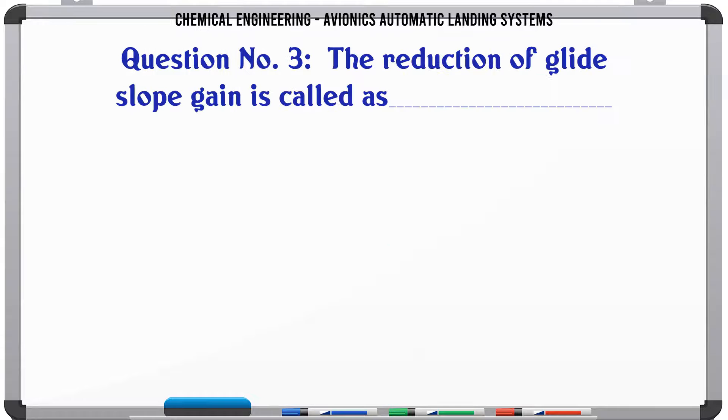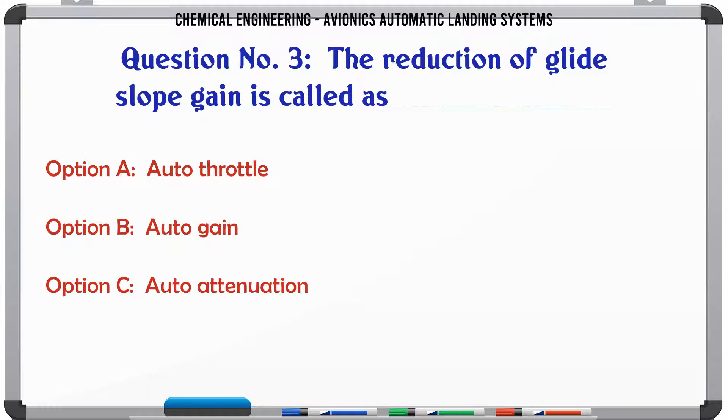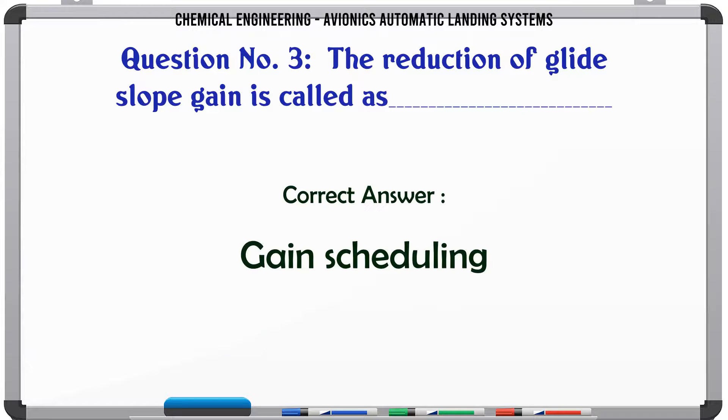The reduction of glide slope gain is called as A. Auto throttle. B. Auto gain. C. Auto attenuation. D. Gain scheduling. The correct answer is Gain scheduling.